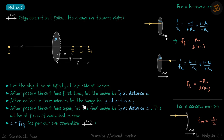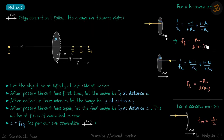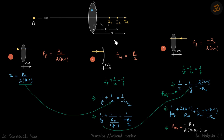With my sign convention, whatever value we get for z is f_equivalent directly — no extra minus sign needed. We solve in three steps: first the lens forms the image, then the mirror forms the image, then the lens again (this time with the incident ray reversed). The focal lengths for each case are: lens with ray from left → f_L = r0/2(mu−1); mirror → f_m = −r0/2; lens with ray from right → f_L = −r0/2(mu−1).